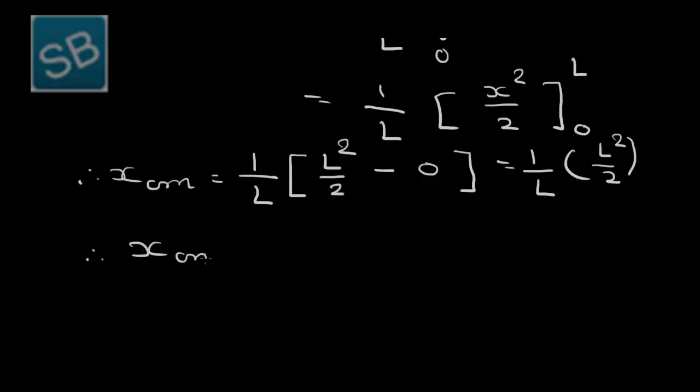Therefore, xcm is equal to L by 2, means the length is up. So at half of its length we will get the center of mass. So we can say at the midpoint.